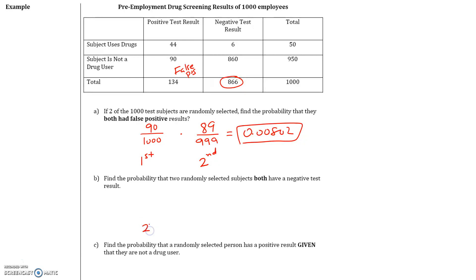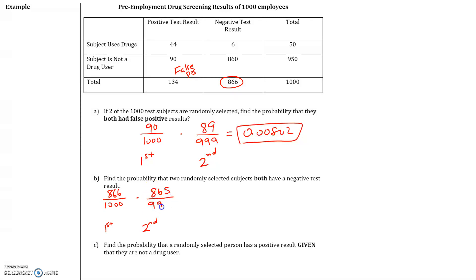We're looking at two subjects — the first subject and the second subject. The probability that the first subject got a negative test result is 866 out of 1,000 total subjects. But once we take out one person who got a negative test result, we only have 865 people who got a negative test result, and the total number of subjects is now 999.